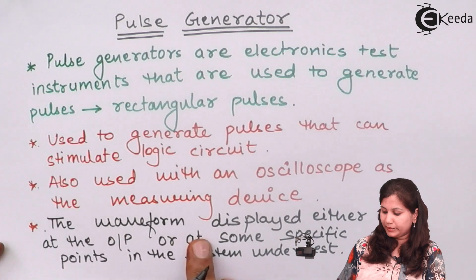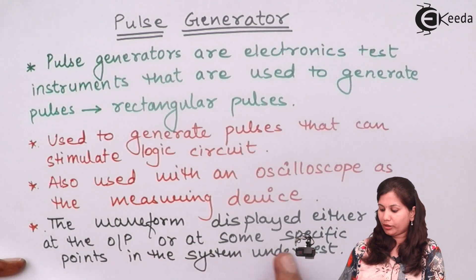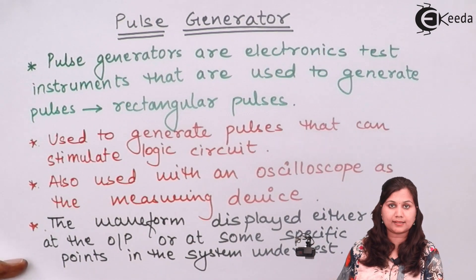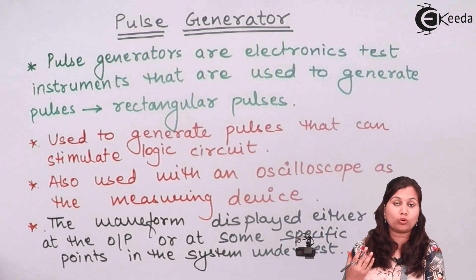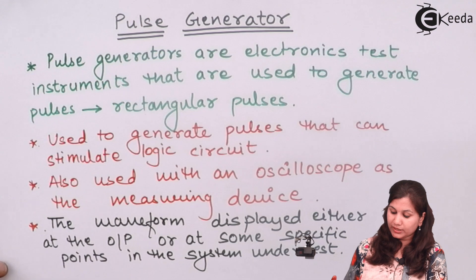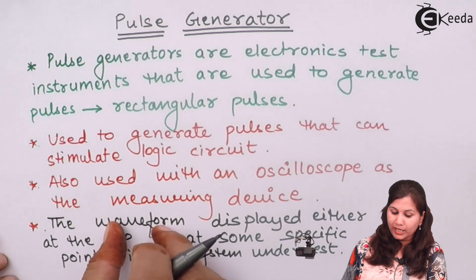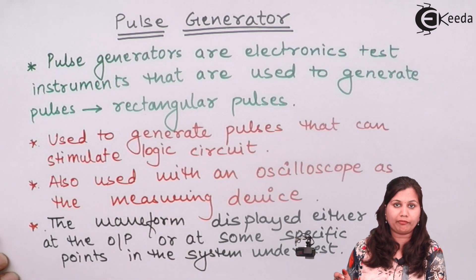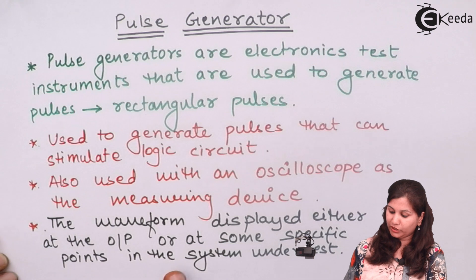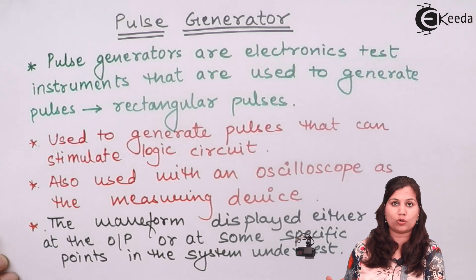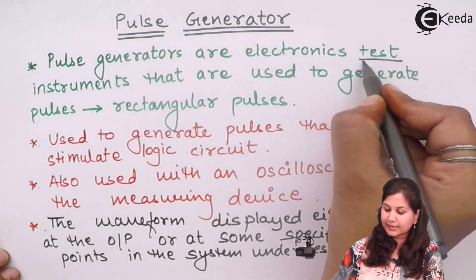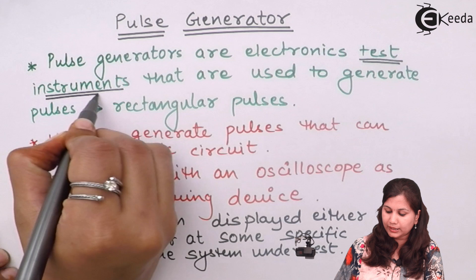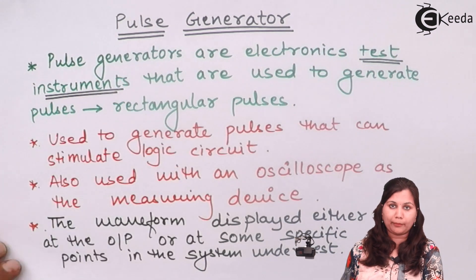This waveform is displayed either at the output or at some specific points in the system under test. If we want any qualitative or quantitative analysis of this waveform, by doing that we can find out the characteristics of the system or device which is under test. That is why pulse generators are used as test instruments in the electronics laboratory.